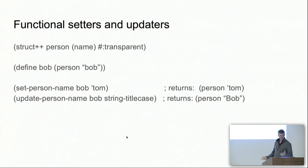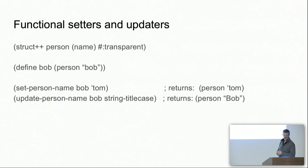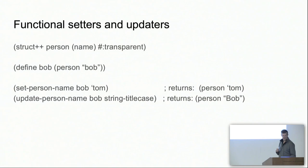Functional setters and updaters — god forbid we do mutation, unless we're using the mutate library, which sounds awesome. Your setter does what you'd expect: you pass it a value and get a new person struct back with the new value. Your updater gets the current value and returns a new struct that has had that value run through your updater function. I want to add a version that will receive the struct itself as a second argument so you can do this based on other data inside the struct, but I haven't written that one yet.